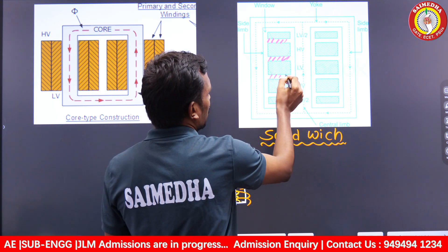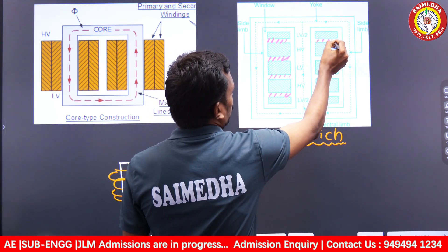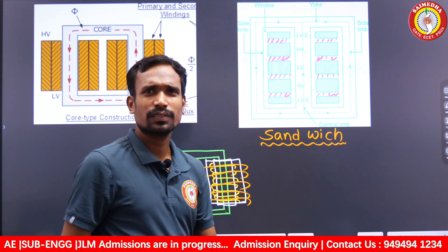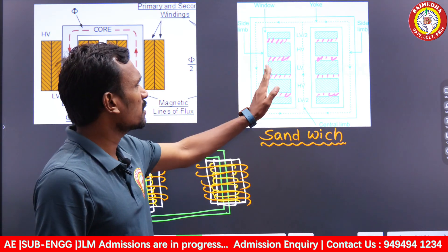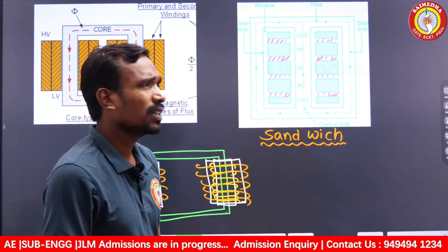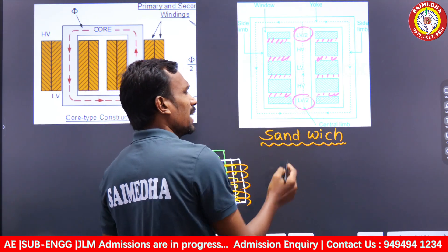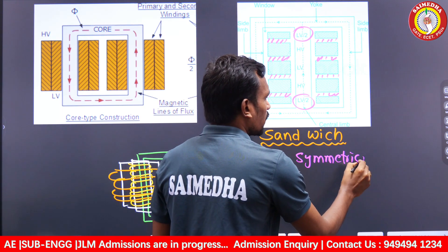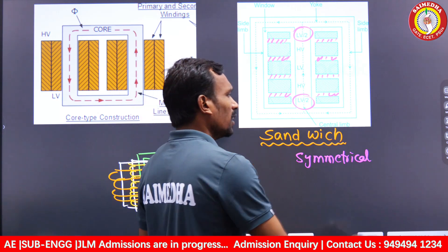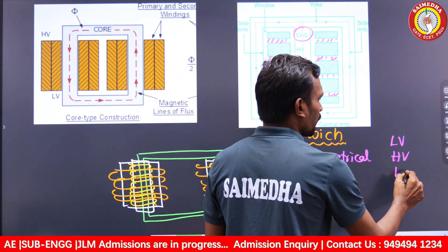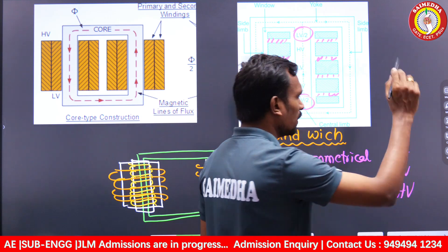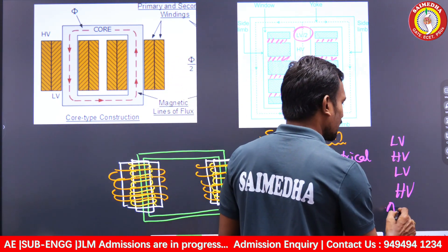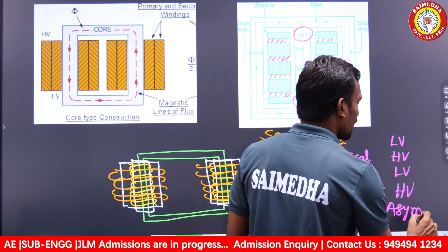Insulation is placed between every winding layer. If the top and bottom layers are the same — for example both LV — that is called symmetrical sandwich winding. If the top layer is LV and the bottom layer is HV, that is called asymmetrical sandwich winding.